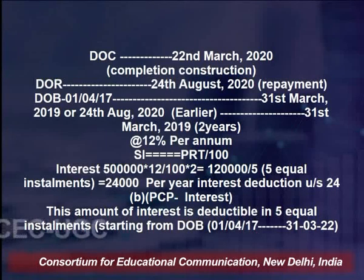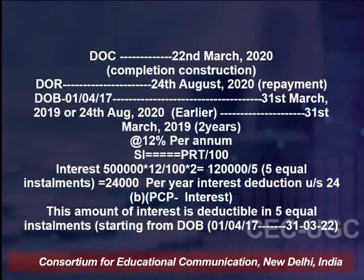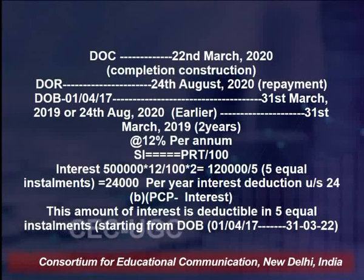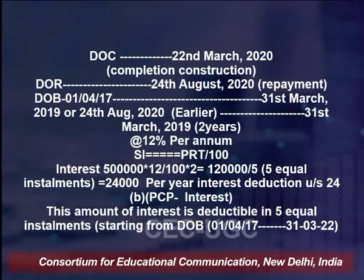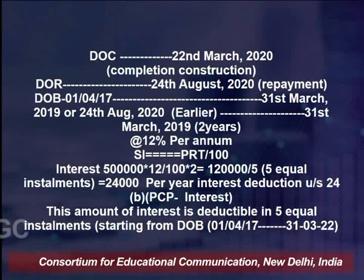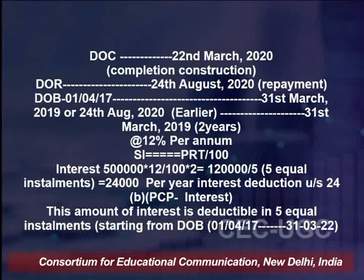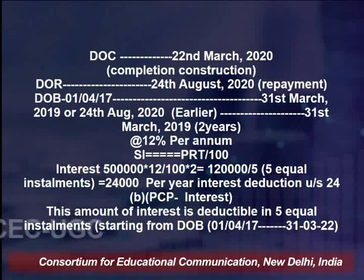For that time period, compute the interest using: Principal × Rate × Time ÷ 100. You get the total interest amount paid during the entire time frame. That total amount will be available to you as a benefit in 5 equal installments, starting from the year of completion — in this case from 2017 until 2022, in 5 equal installments.